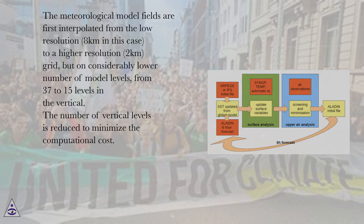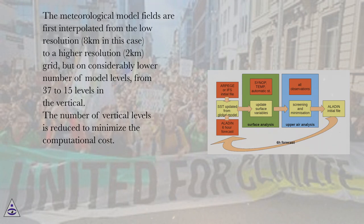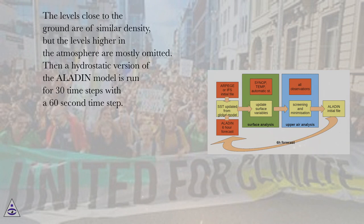The meteorological model fields are first interpolated from the low resolution (8 kilometers in this case) to a higher resolution (2 kilometers) grid, but on a considerably lower number of model levels — from 37 to 15 levels in the vertical. The number of vertical levels is reduced to minimize computational cost. The levels close to the ground are of similar density, but the levels higher in the atmosphere are mostly omitted.